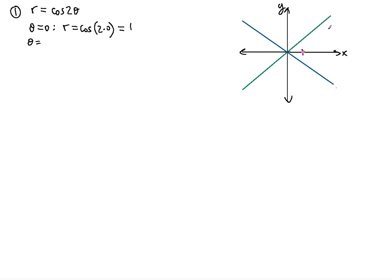Next, at θ = π/4: because of the factor of 2, multiplying π/4 gives π/2. So r = cos(2 × π/4) = cos(π/2) = 0. We're back at the origin. The curve starts at 1 and curves back to the origin at θ = π/4.